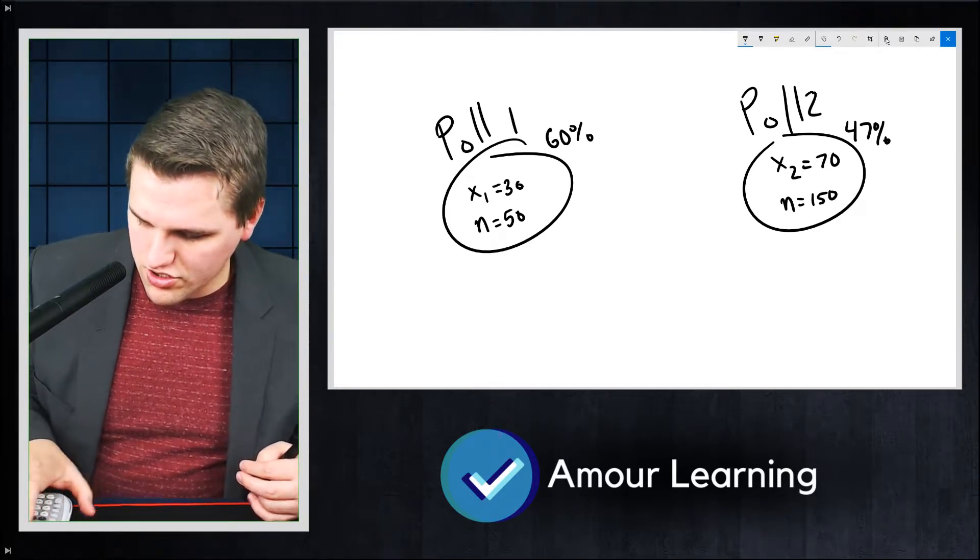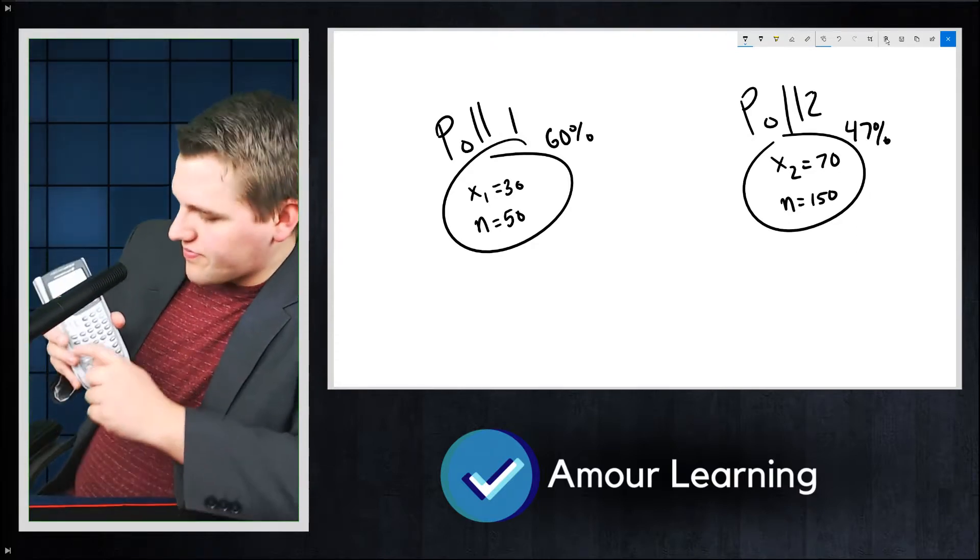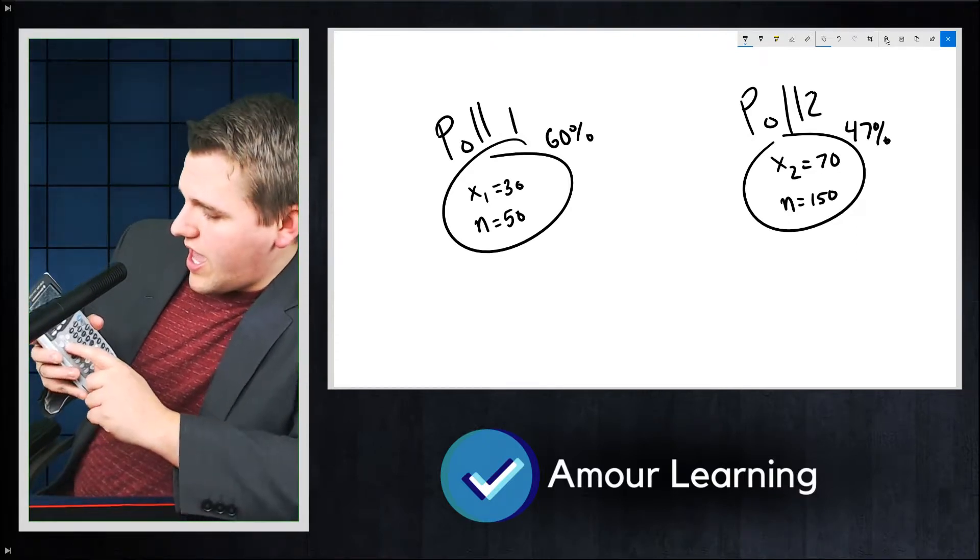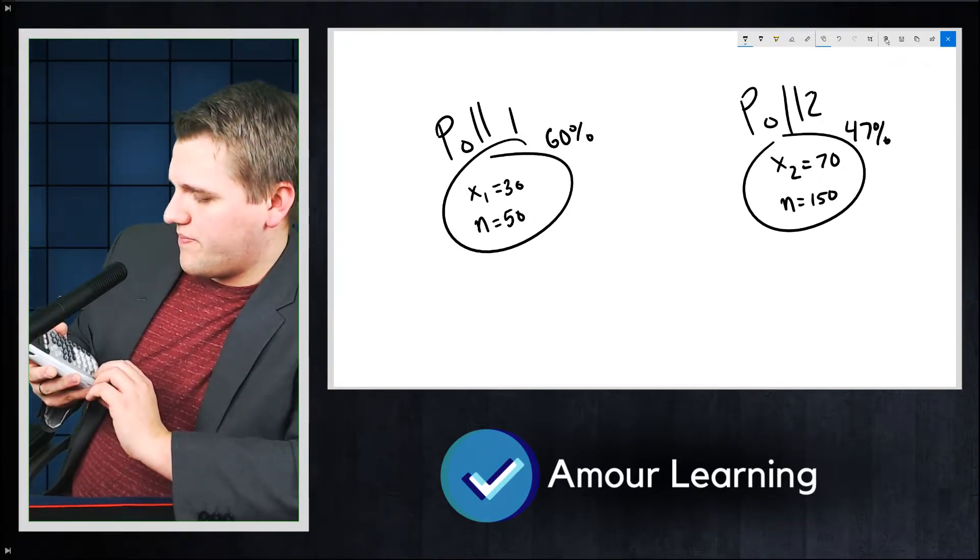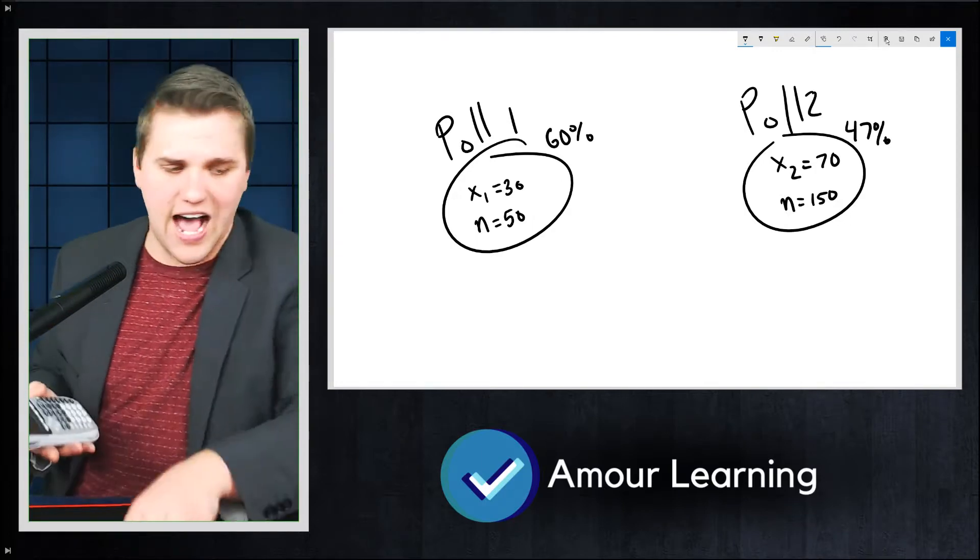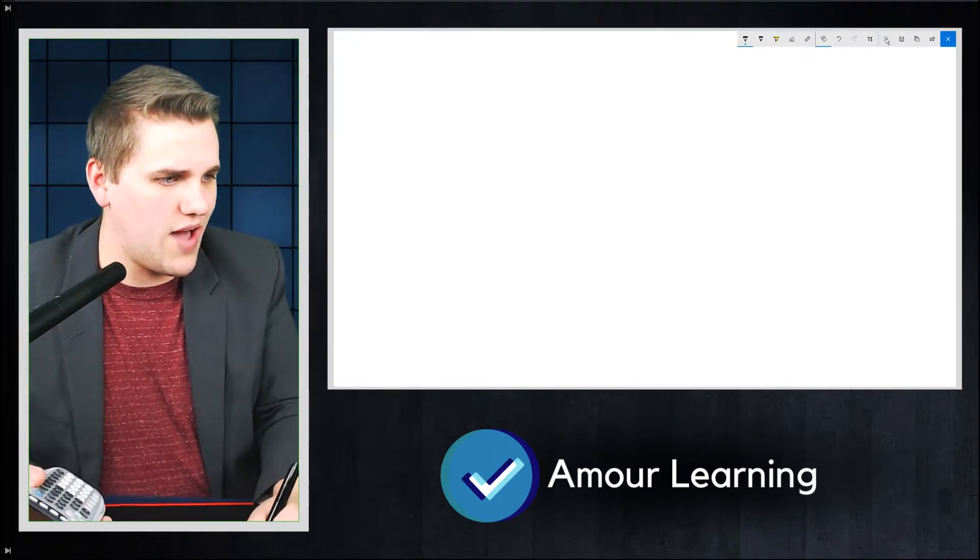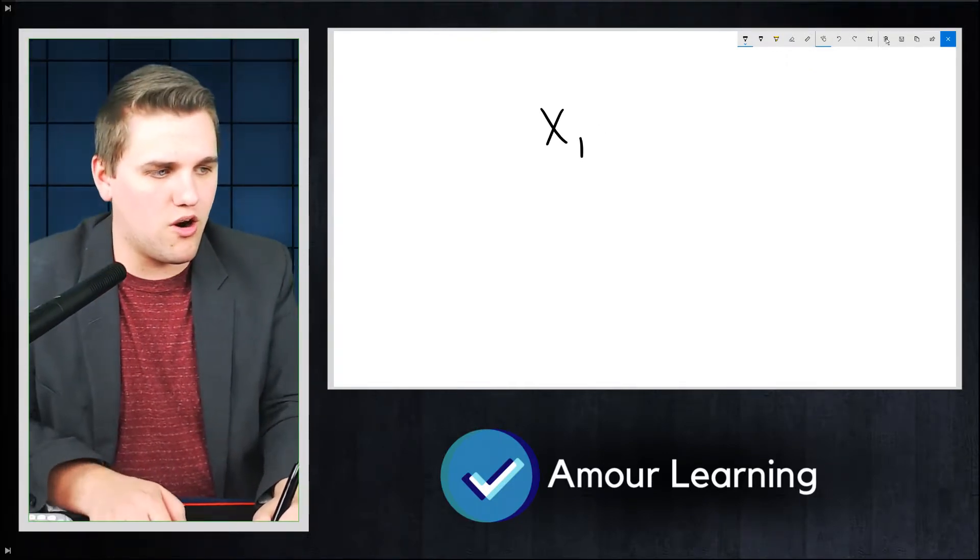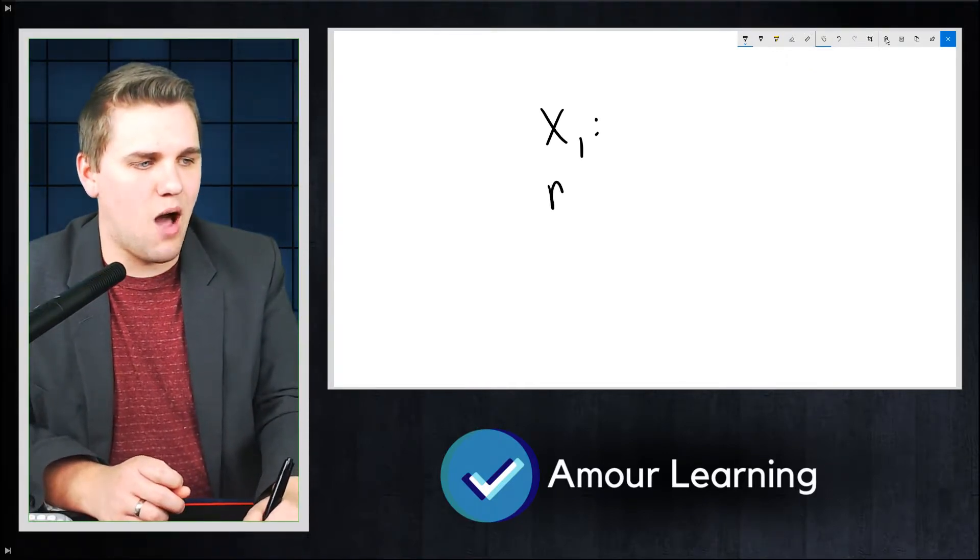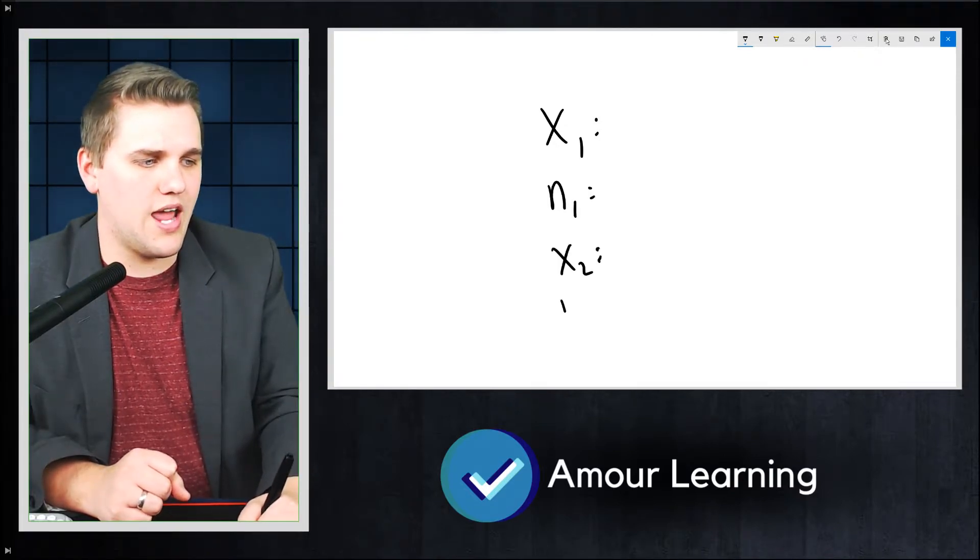So to figure out how to get there, you just hit stat, go over to the test menu, and it should be number six, which is two prop Z-test. Then it's going to ask you the following information: X1, which is the number of successes for your first sample, and how many people were in your first sample, and then same thing for X2 and N2.